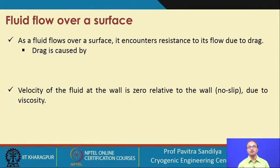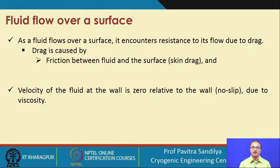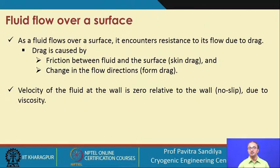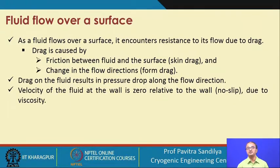Whenever there is a fluid flow on a surface, the fluid encounters some kind of resistance to its path and this resistance is called drag. This drag is caused primarily by two effects. One is the friction between the fluid and the surface, which we call skin drag. Then, whenever a fluid is flowing, it might change its direction during flow, and in that case we have form drag. For example, if the fluid is flowing through some elbow or T-joint, there is a change in the direction of the flow, and this causes form drag.